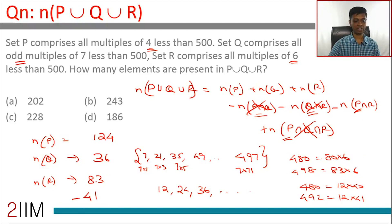You have to add these three and then subtract this. 124 plus 36 is 160, these two add up to 160. 83 minus 41 is 42. 160 plus 42 is 202. This is the right answer, and wonderful question.